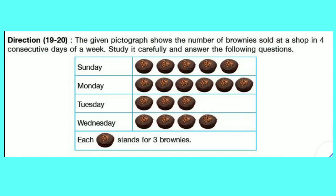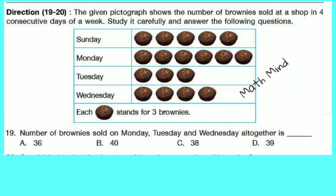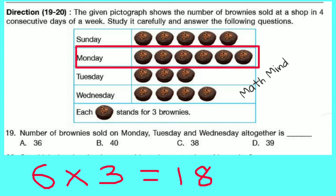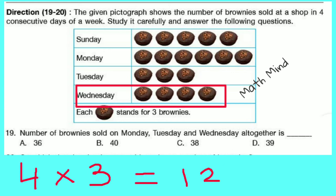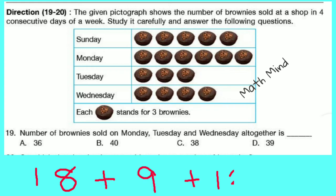Directions for questions 19 and 20: The given pictograph shows the number of brownies sold at a shop in four consecutive days of a week. Each picture stands for 3 brownies. Question number 19: The number of brownies sold on Monday, Tuesday and Wednesday altogether is dash. Monday: 6 × 3 = 18 brownies. Tuesday: 3 × 3 = 9 brownies. Wednesday: 4 × 3 = 12 brownies. Total: 18 + 9 + 12 = 39. So the correct option is D — 39 brownies sold on Monday, Tuesday and Wednesday altogether.